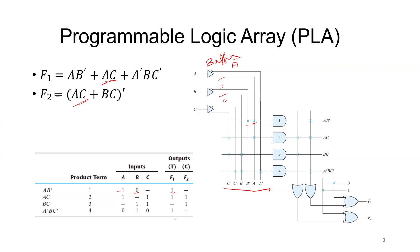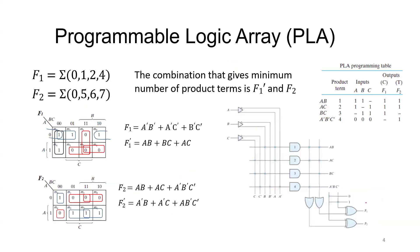The OR gate connections are programmed accordingly. Since F2 has the whole complement (dash), it is implemented in complement form, and the outputs are taken as F1 and F2. That is one example for programmable logic array.